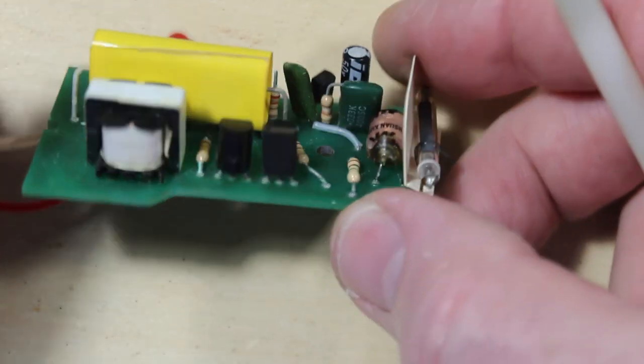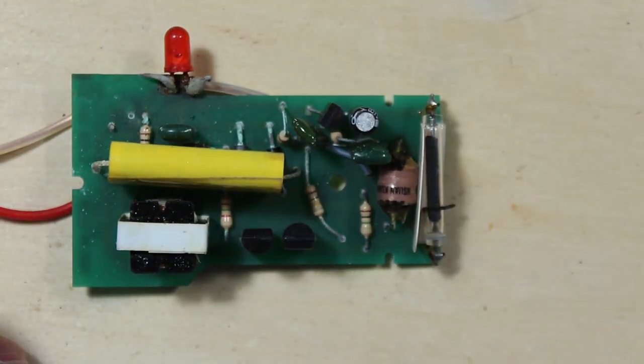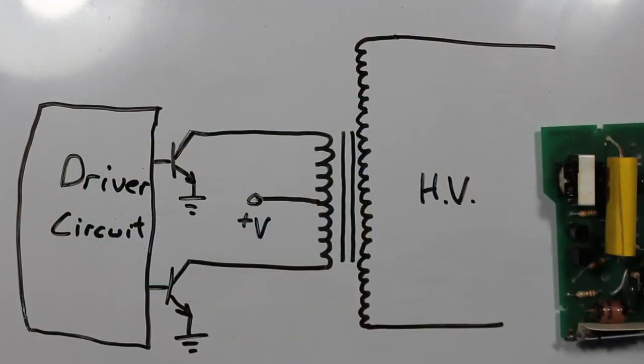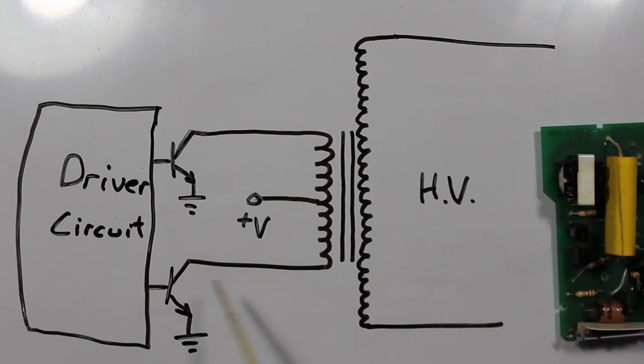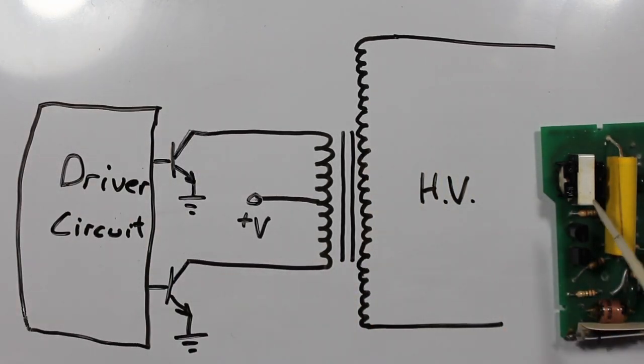While checking some of the circuitry out and getting the board cleaned up, we've run into our first kind of big hurdle here. This is very simplified, but this transformer right here—we're trying to take three volts and put it up approaching 300 volts, probably 250 or so.